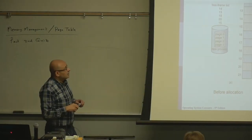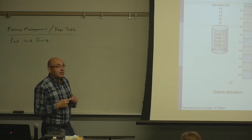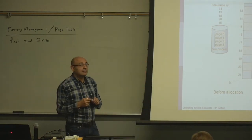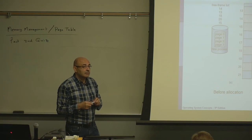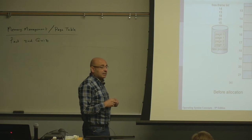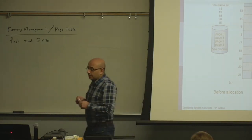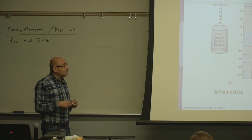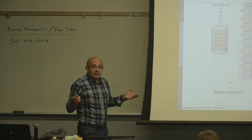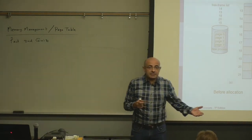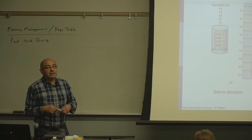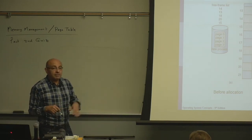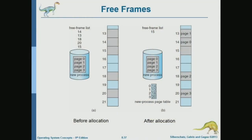This is how we map pages into frames. The page table is indexed by the page number, so there is an entry for each page. The free frame list may not be sequential because frames become free as processes terminate — we don't know which processes hold which frames. When a process terminates, it releases its frames, which are not necessarily in order. That's why the free frame list may have non-adjacent frames.